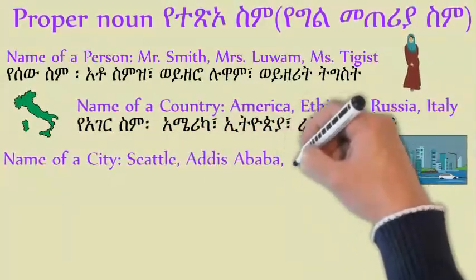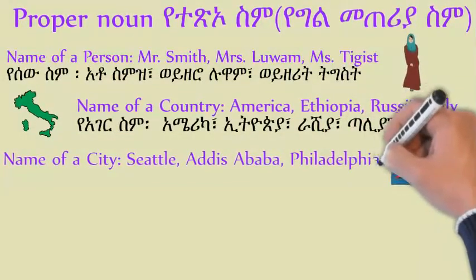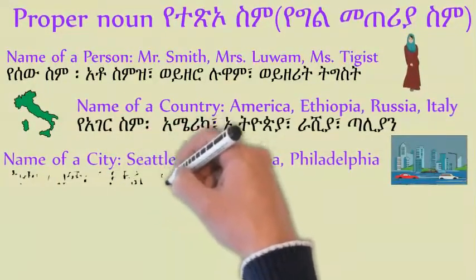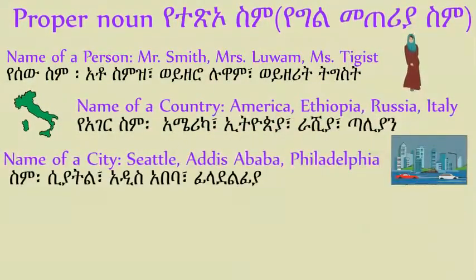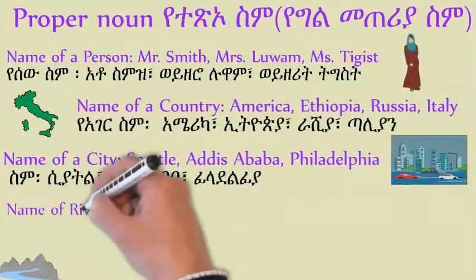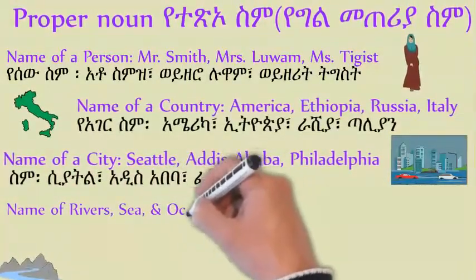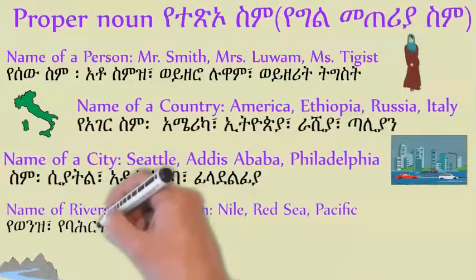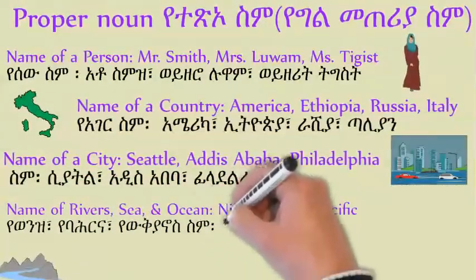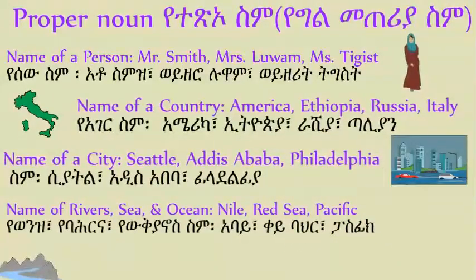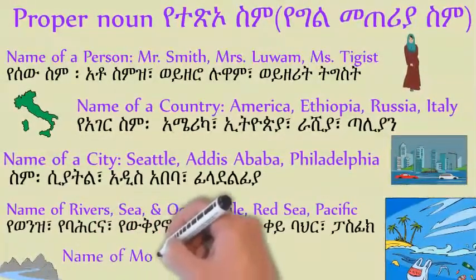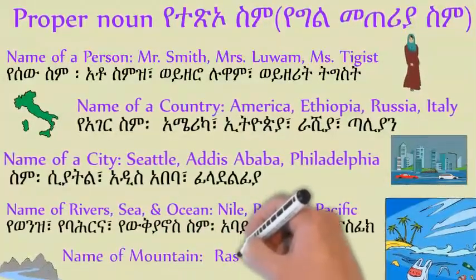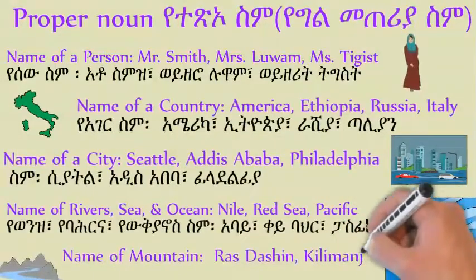Name of river, ocean, and seas — they are also like Nile, Red Sea, or Pacific Ocean. All these are proper nouns. Name of mountains like Rastashan, Kilimanjaro, Everest — all these are also proper nouns. They are specific to the mountain, and all these we call them proper nouns.